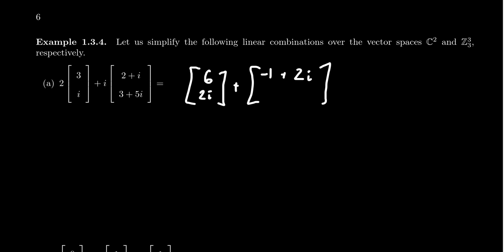So I'm going to put the real number first. For the next one, you're going to get i times 3, which is a 3i. And then you're going to get i times 5i, which is a negative 5, like so.